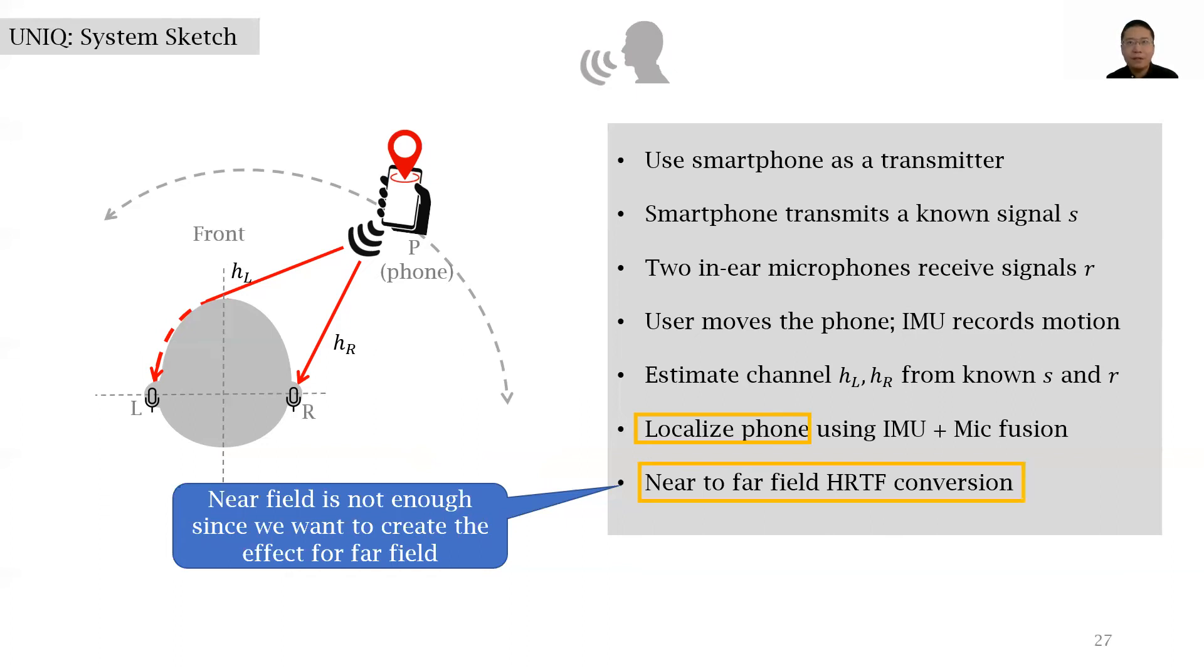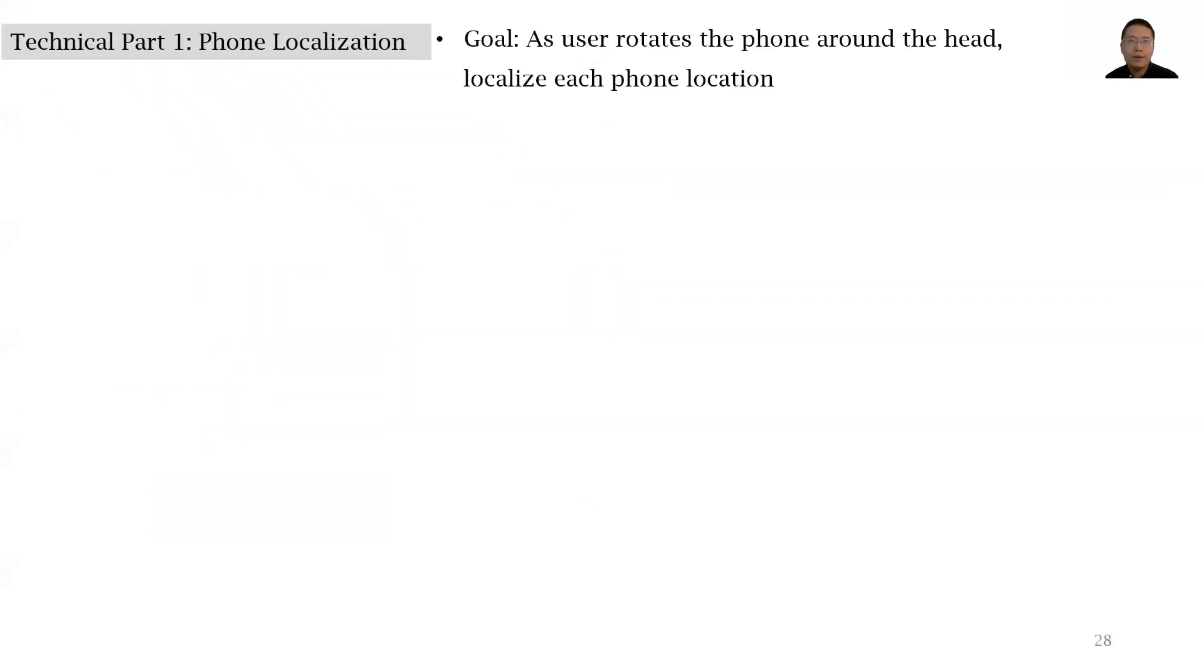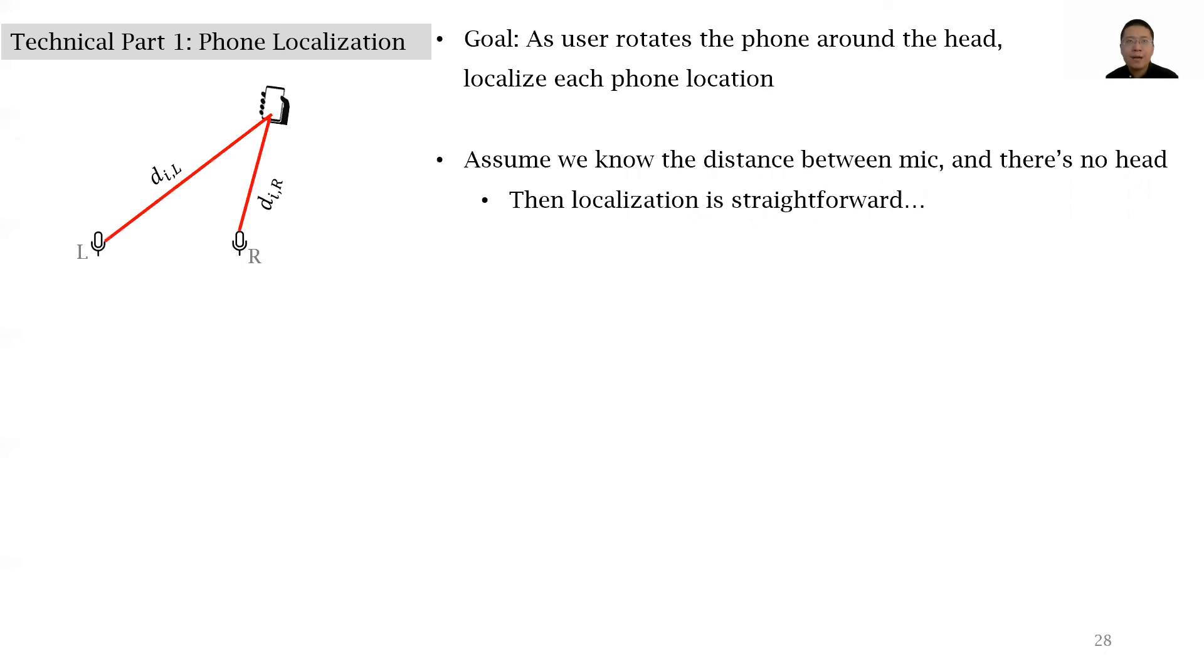Let me talk about the intuition of phone localization. Our goal is that as the user rotates the phone around the head, we want to localize each phone location at each time instance. Let's first look at a simple case. Assume we know the distance between microphones and there is no head between the microphones. Sound localization is straightforward because we can essentially get the acoustic time of flight between the smartphone and the in-ear microphones. This can translate to the distances DIL and DIR. And then we can perform simple trilateration and the phone location can be estimated.